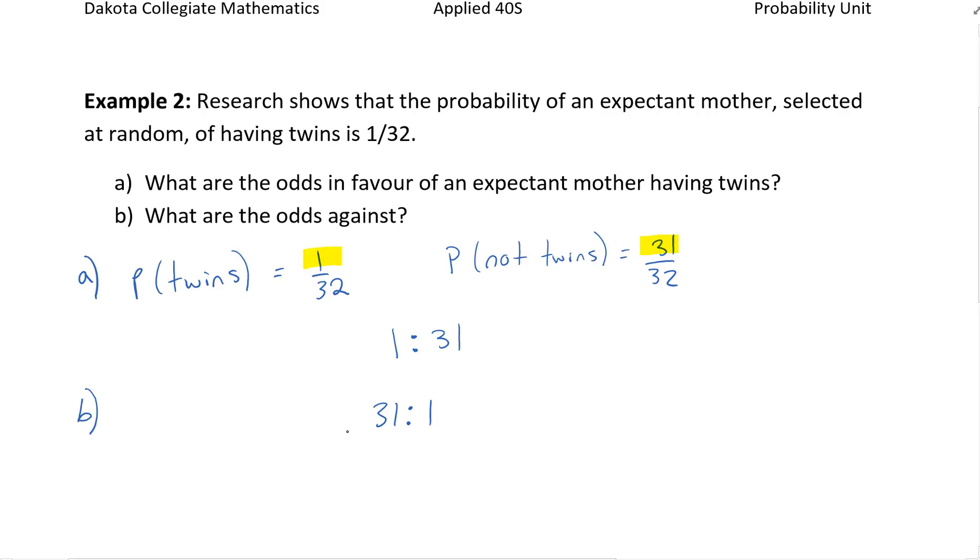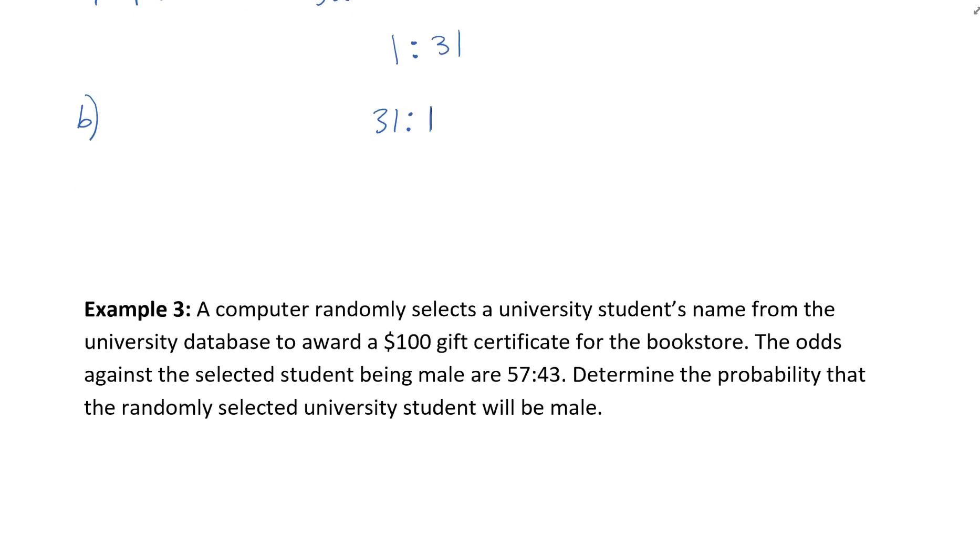In example 3, they give you things in reverse. A computer randomly selects a university student's name from the database to award a $100 gift certificate for the bookstore. The odds against the selected student being male are 57 to 43.